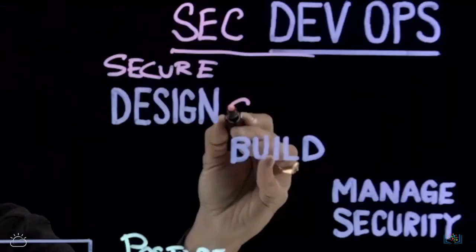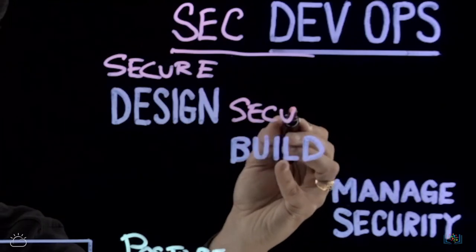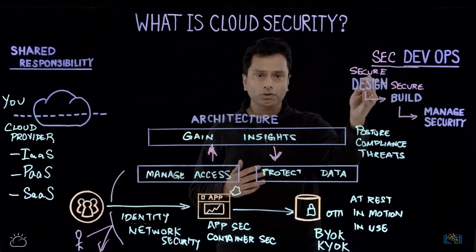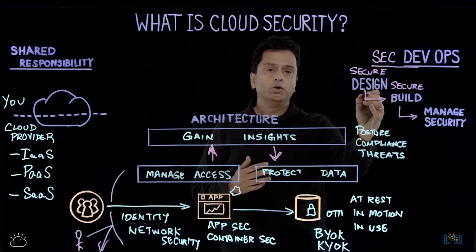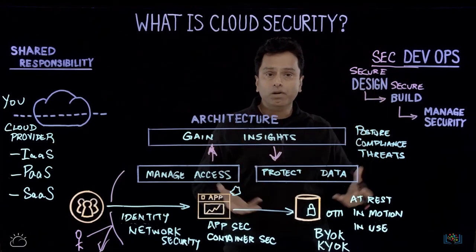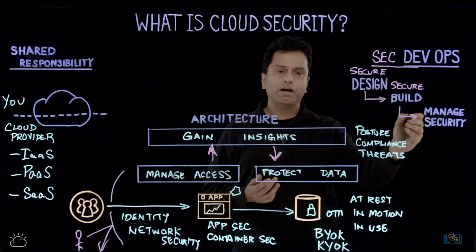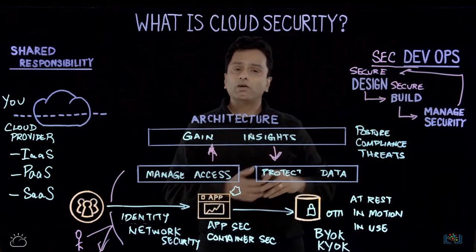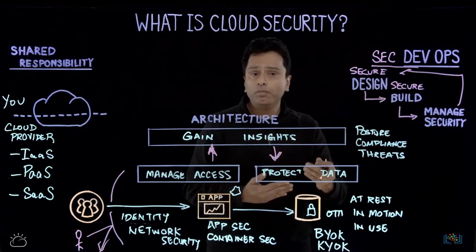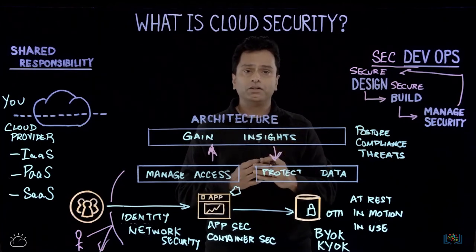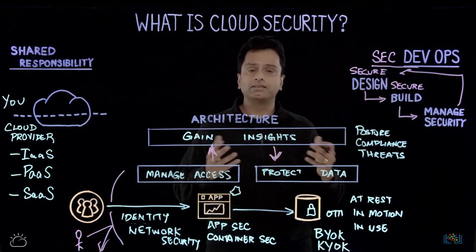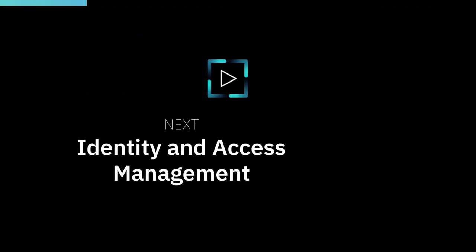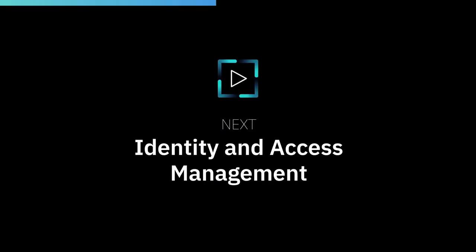As part of SecDevOps, you have secure design and architecture, you build secure applications, and you deploy and manage security in a continuous fashion. Then you have a closed loop so that whatever you find, you may need to remediate, re-architect your application, or re-implement certain things as the threat landscape evolves. In the next video we will look at identity and access management.